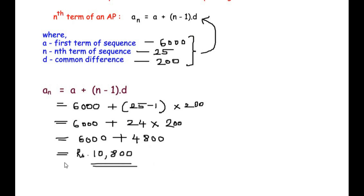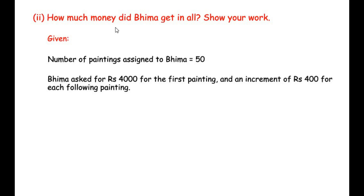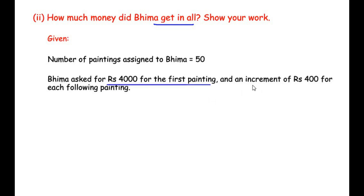Now the second sub question: how much money did Bhima get in all? Show your work. This question asks for the total amount Bhima was paid for all 50 paintings. The given information for Bhima: number of paintings assigned is 50, he asked for Rs. 4000 for the first painting with an increment of 400 for each following painting.